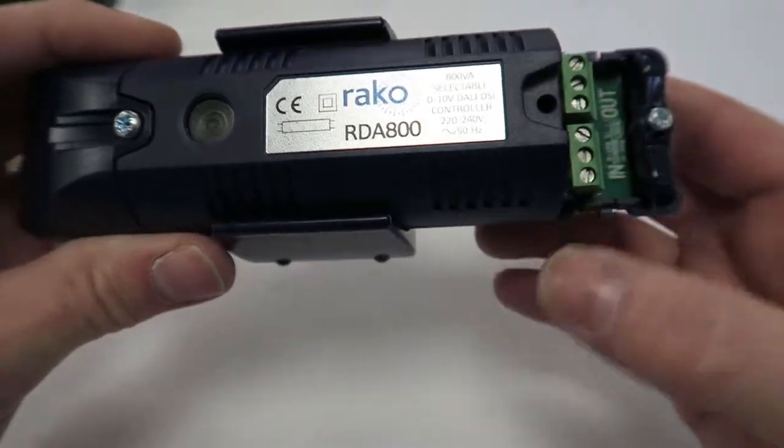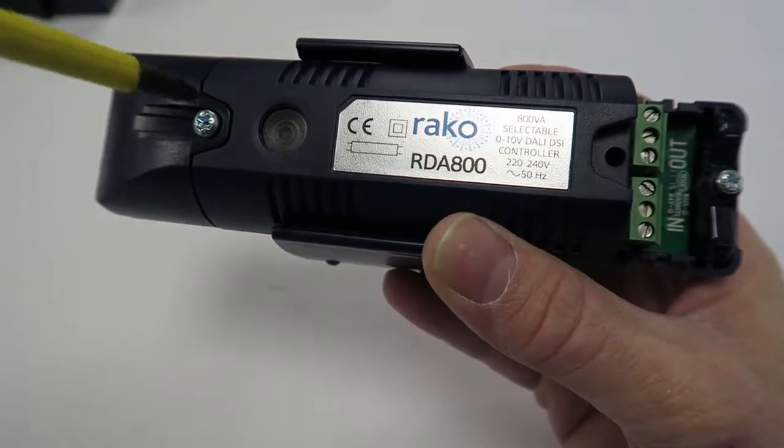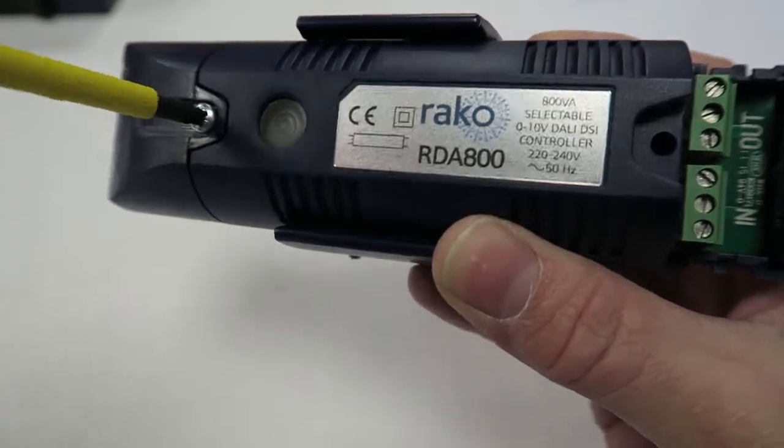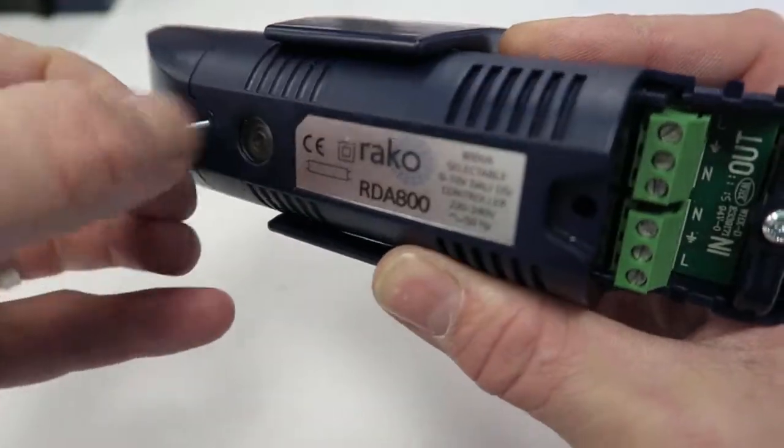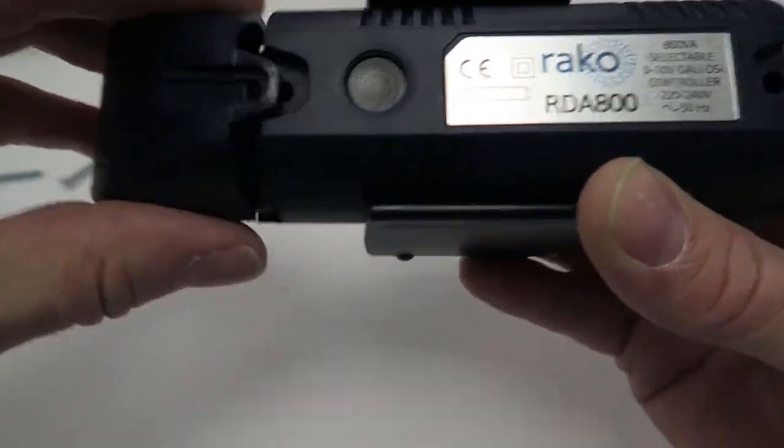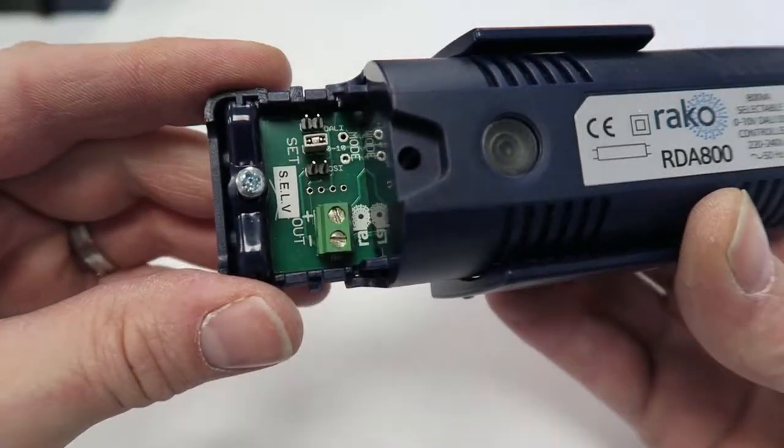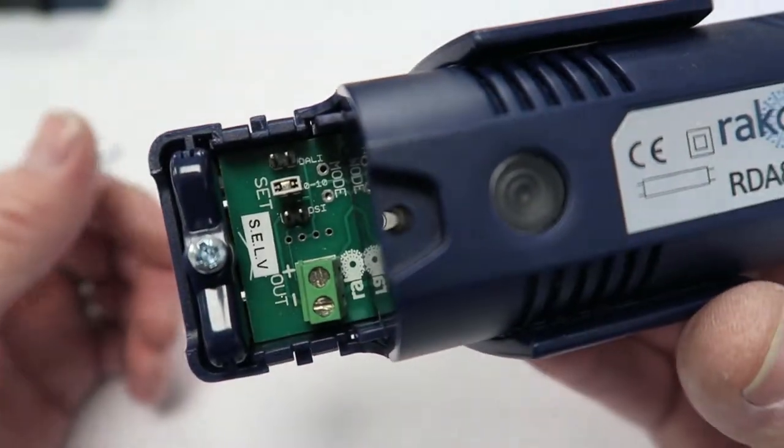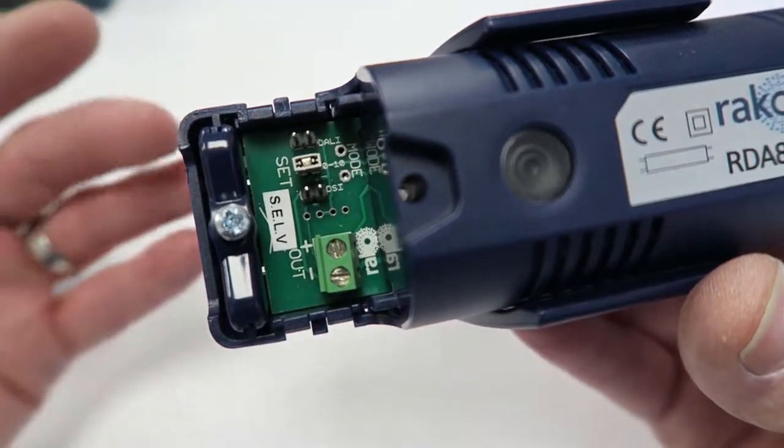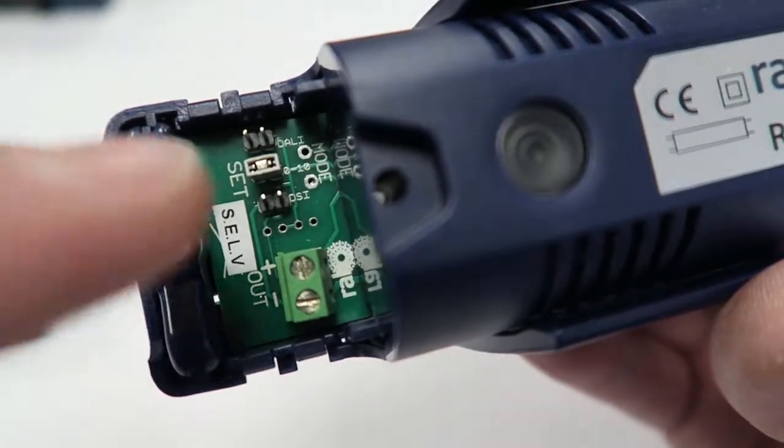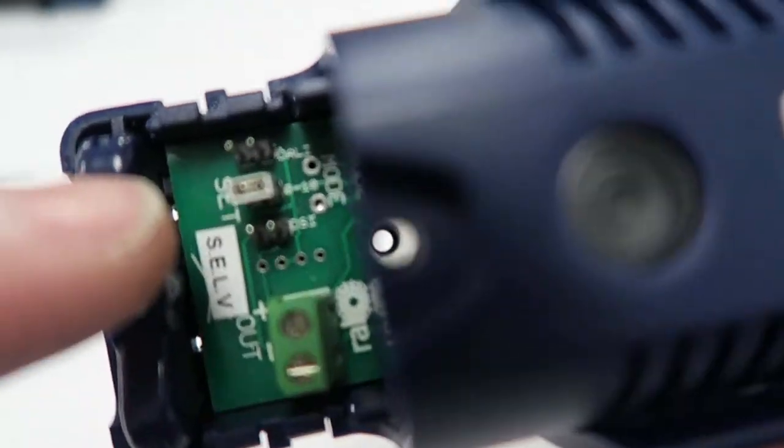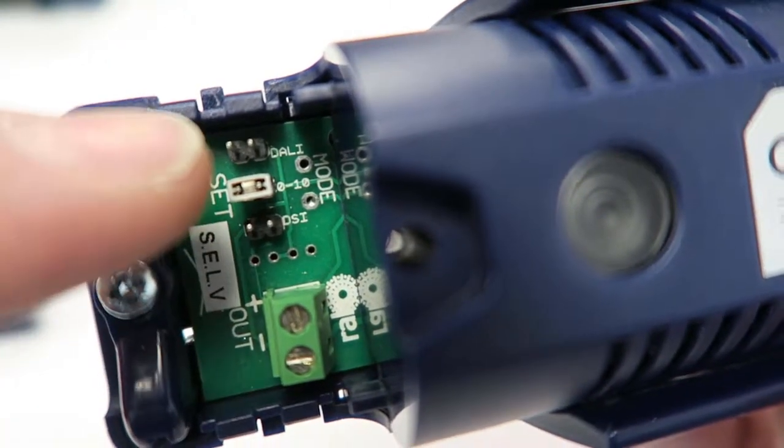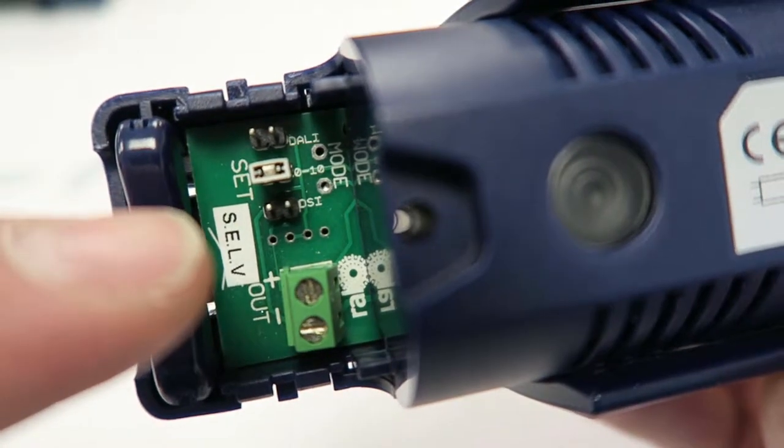That's the live in and the out, so there's a switching relay obviously for 0-10 dimming, and for DSI, and for DALI. Obviously DALI, you can switch the lights on and off really by the DALI signal, so the relay isn't really required, but it's there anyway. So this side, you can see, this is where you set your DALI, 0-10 and DSI, so select whatever type of dimming you want with this module.